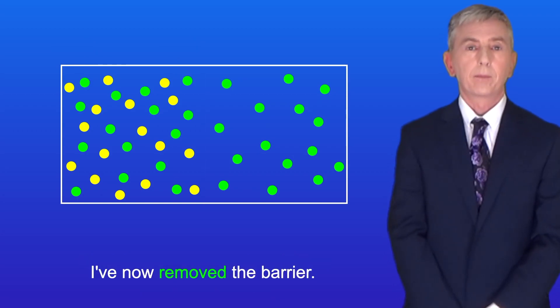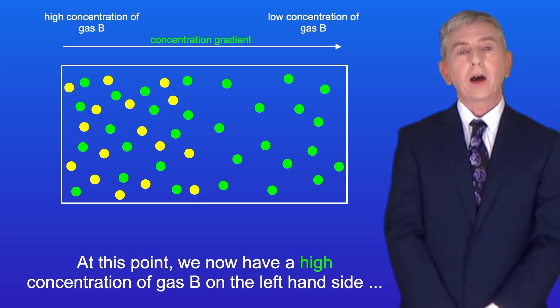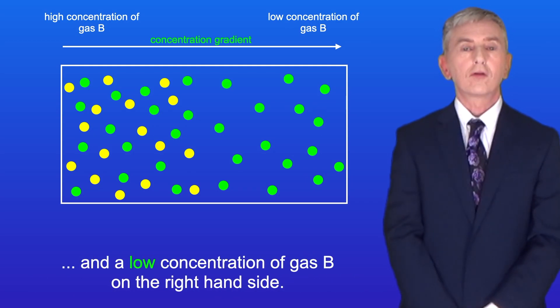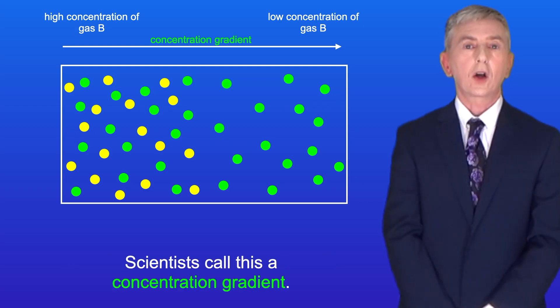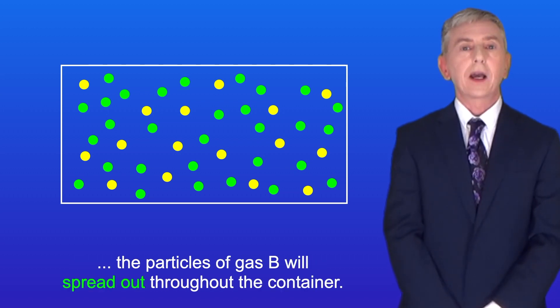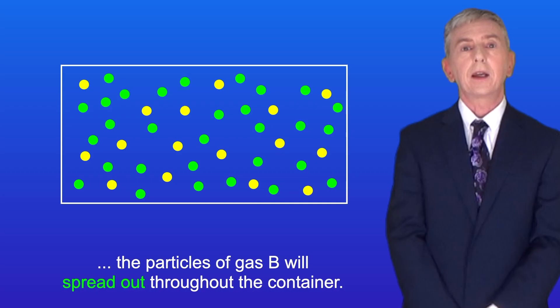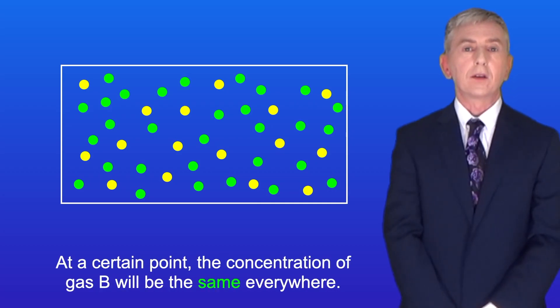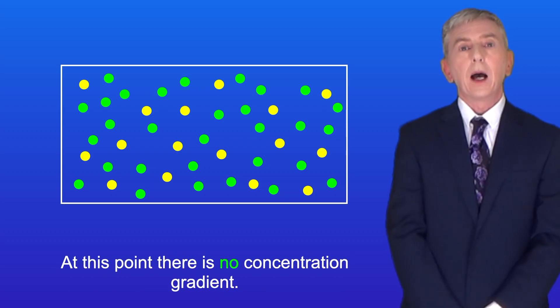I've now removed the barrier. At this point we now have a high concentration of gas B on the left-hand side, and a low concentration of gas B on the right-hand side. Scientists call this a concentration gradient. Over time, as the particles move randomly, the particles of gas B will spread out throughout the container. And at a certain point, the concentration of gas B will be the same everywhere. At this point there is no concentration gradient.